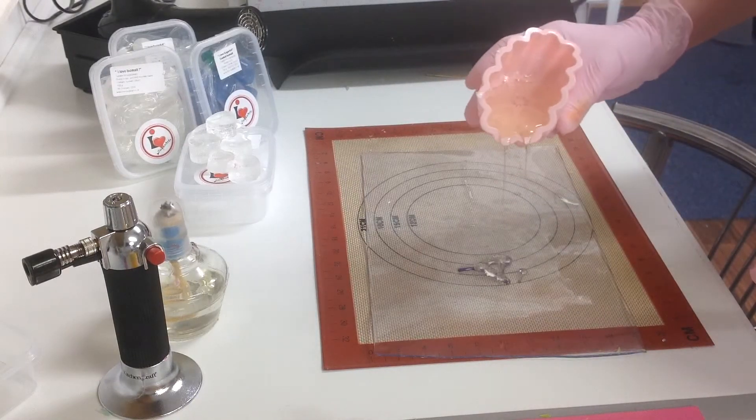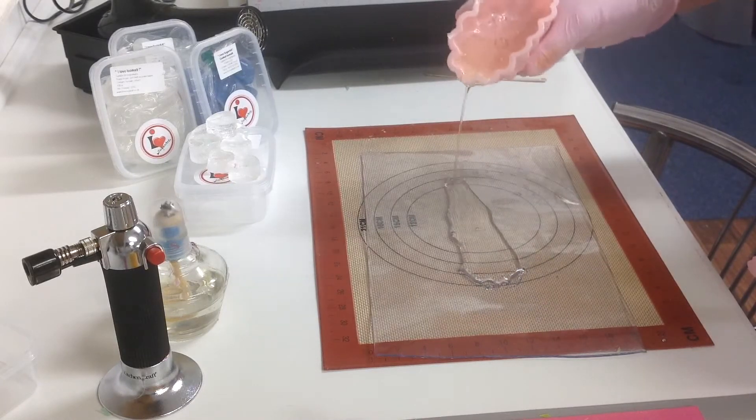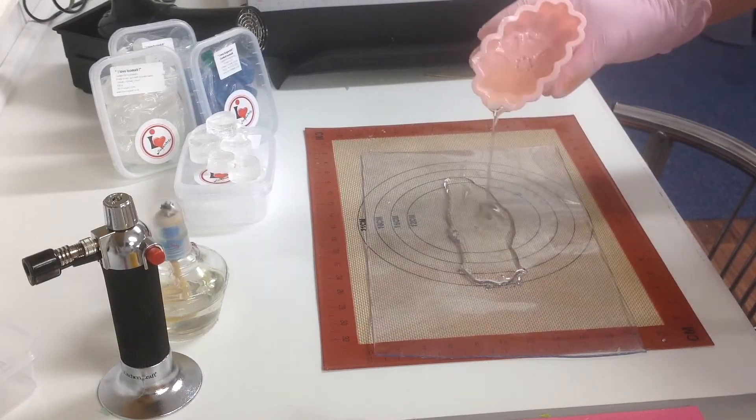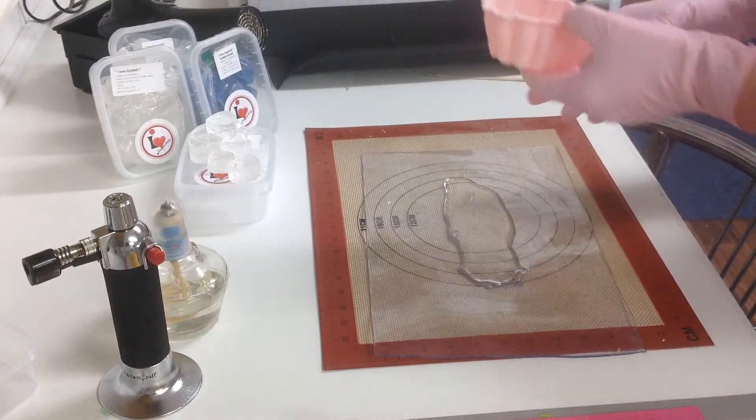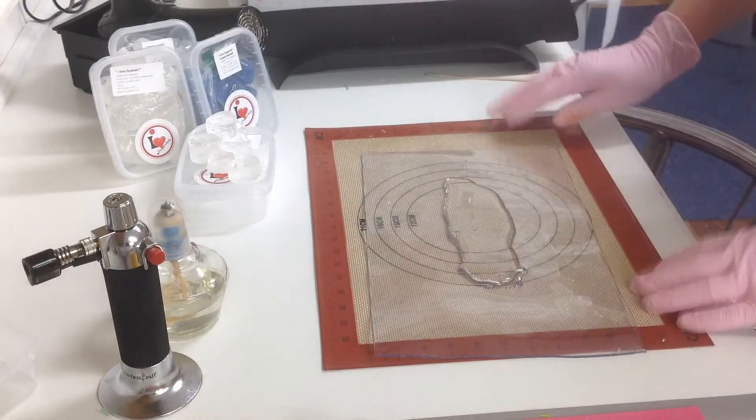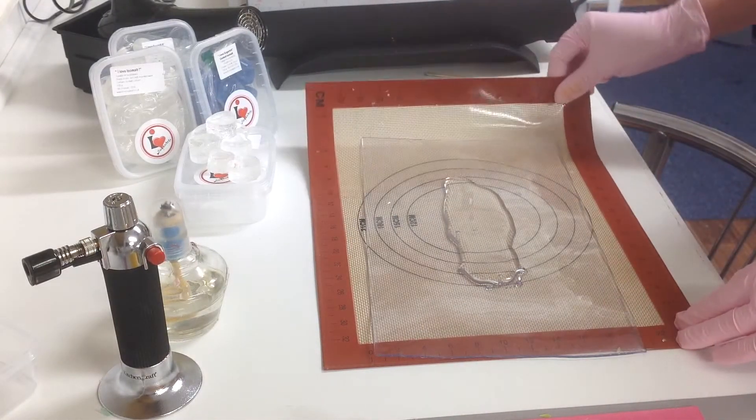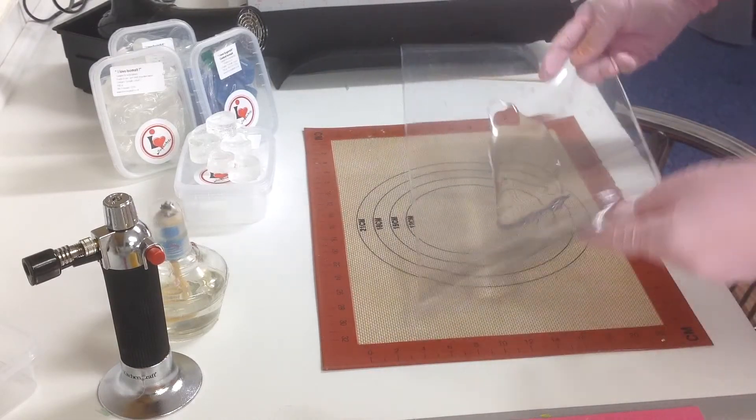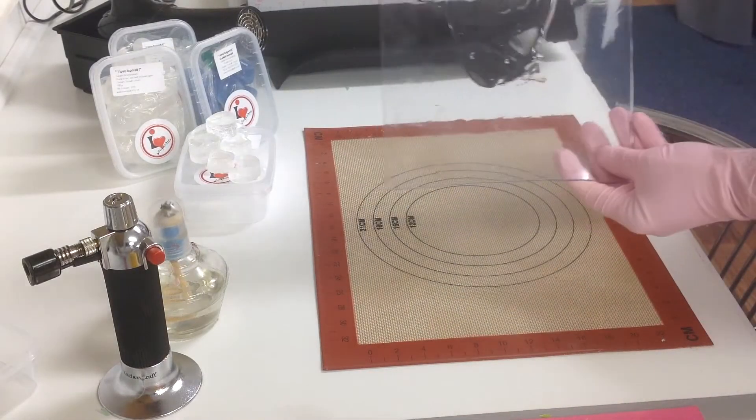If you don't have a silicone pot you can obviously use a Pyrex jug. I'm going to pour some of that hot isomalt onto a silicone mat. I've got my table protected with another heatproof silicone mat and the clear one goes on top.